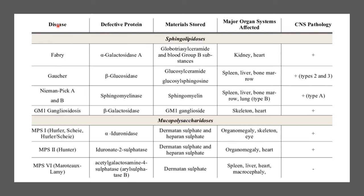Here is a list of the lysosomal storage diseases and the proteins or enzymes that are deficient in their respective diseases, as well as a list of the materials that get accumulated because the lysosomal enzymes don't break them down, and a list of the major organs that are affected. In most of the lysosomal storage diseases, the CNS or central nervous system is also affected.